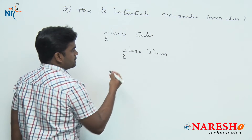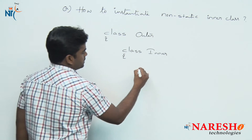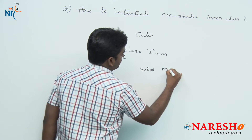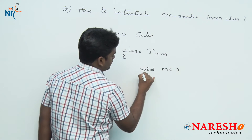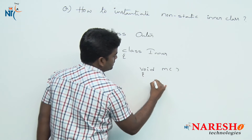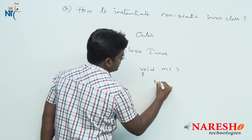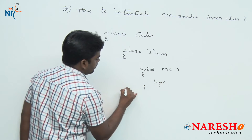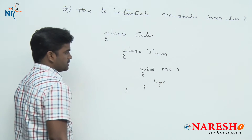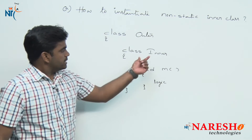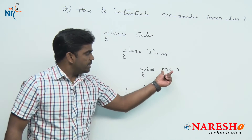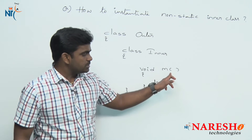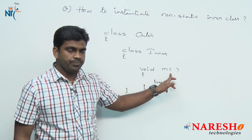Inside the inner class there is a method — a void method called M — and inside some logic is there. Now I want to access the inner class method M. M is a non-static method.